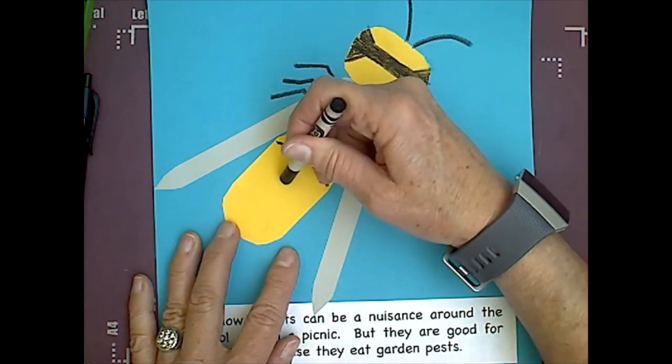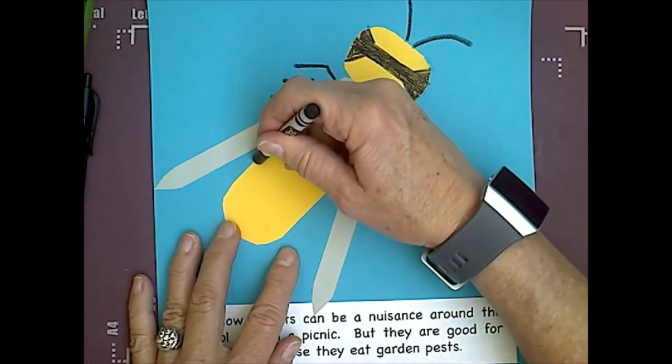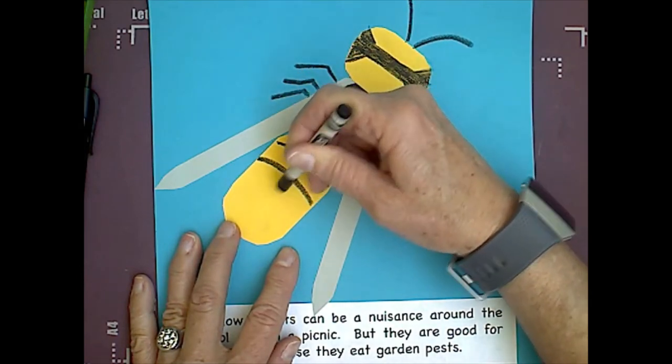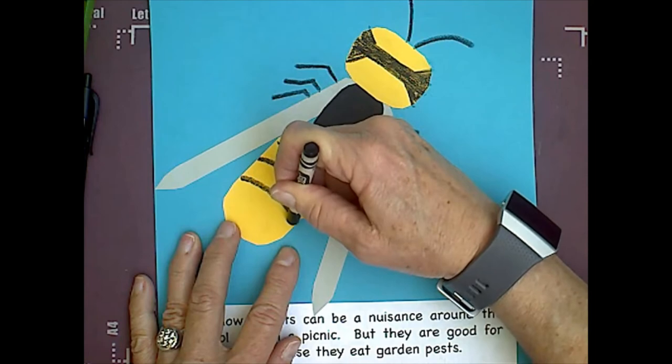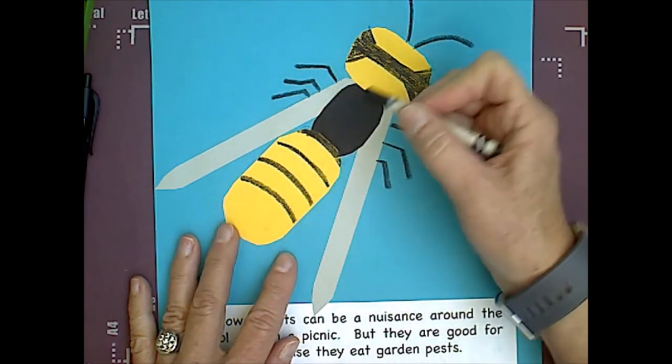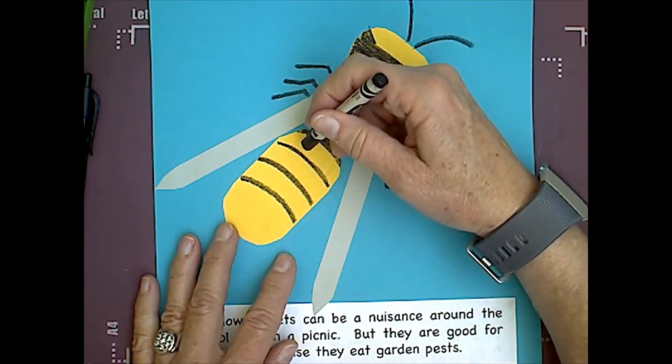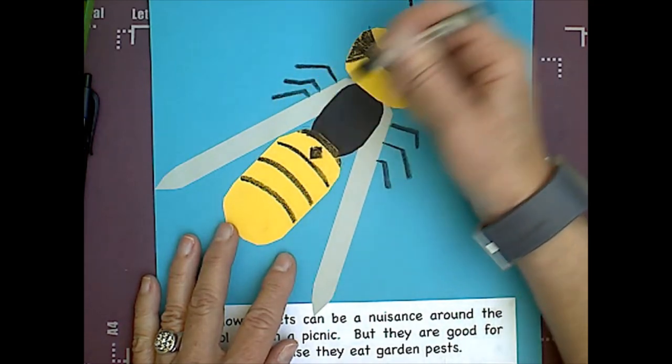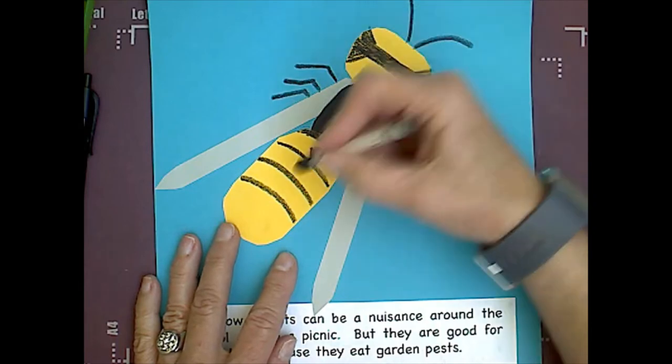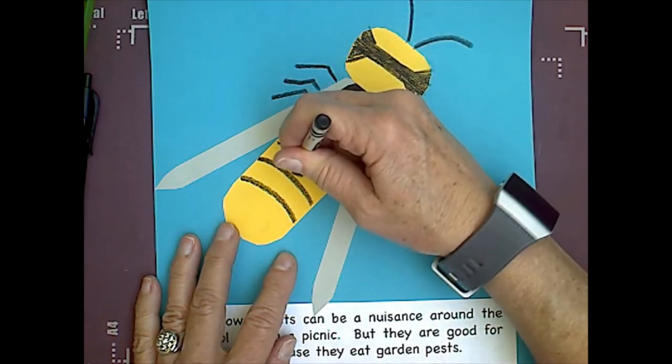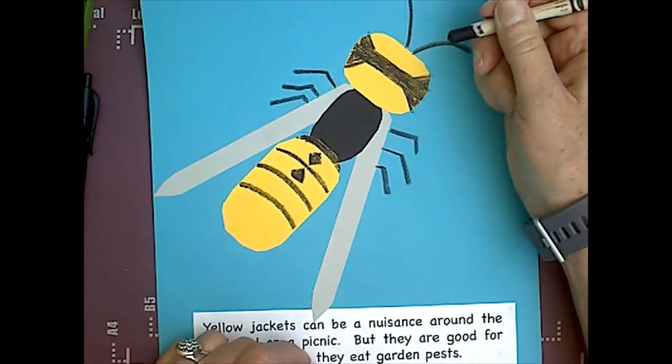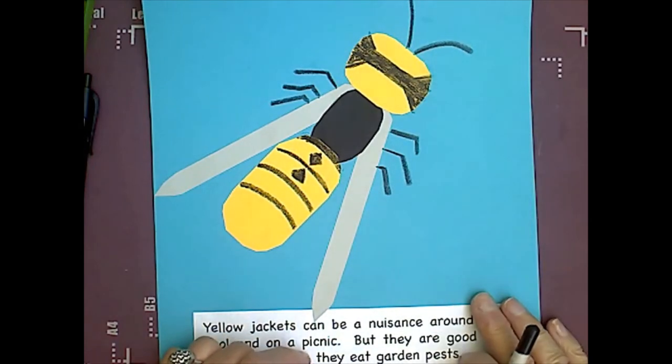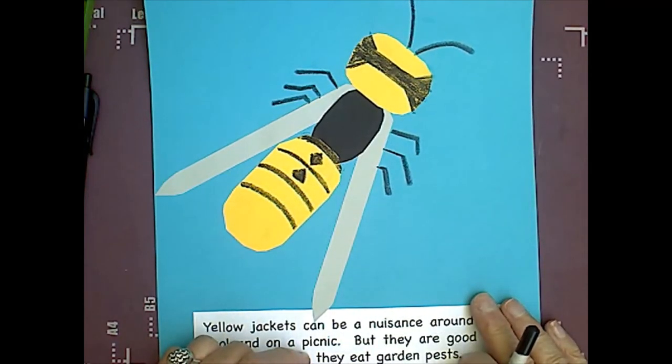And then, I'm going to move down a ways. And I'm going to add a stripe. I'm going to move down again. And I'm going to add another stripe. And I'm going to move down again. And I'm going to have three stripes. One, two, three. Okay. And then, this is going to be kind of a diamond shape or a square. And then, I'm going to make another shape right here that's kind of more like a triangle. And that is the yellow jacket.